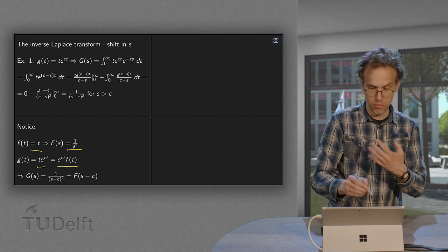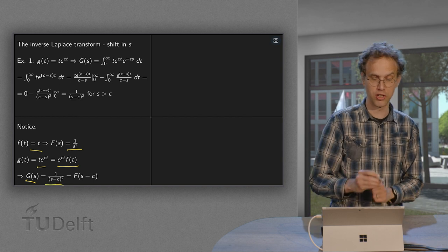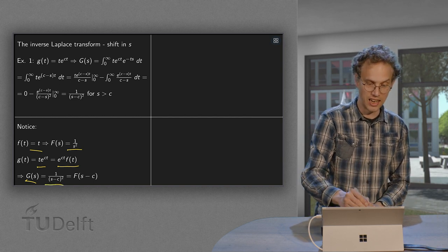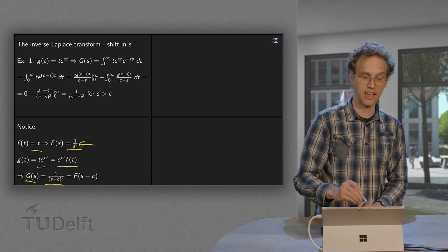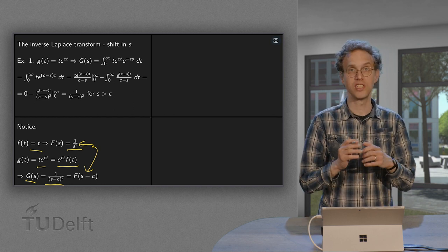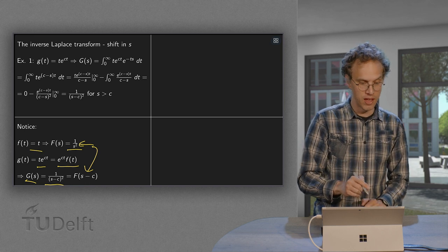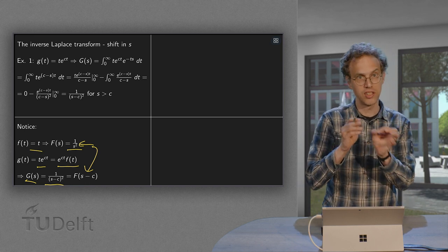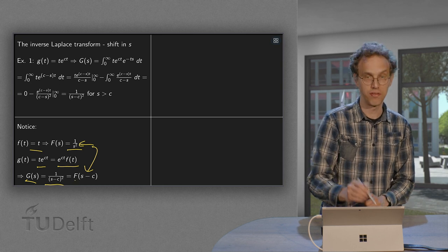Furthermore, we computed our G(s), which equals 1/(s-c)², which is exactly F(s-c). If you plug s-c in here, you'll get 1/(s-c)², which gives us our G(s). So what do we observe? If g(t) = t·e^(ct), then G(s) = F(s-c).